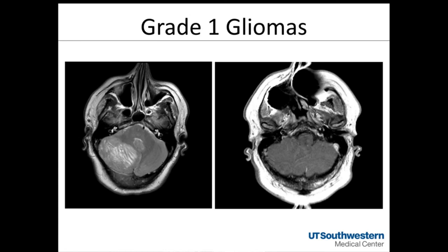This is not a glioma, but Lhermitte-Duclos disease — such a striking example it's worth sharing. The patient presented with this large cerebellar lesion showing the very classic tiger-striping appearance, with mass effect on the brainstem, effacement of the fourth ventricle, and hydrocephalus. An ETV was performed, then later the lesion was resected and confirmed as Lhermitte-Duclos. Germline PTEN testing revealed Cowden syndrome, and the patient has several systemic tumors being monitored.